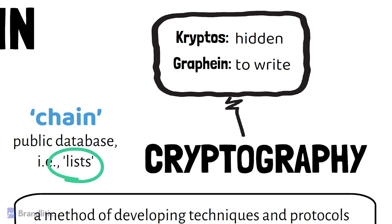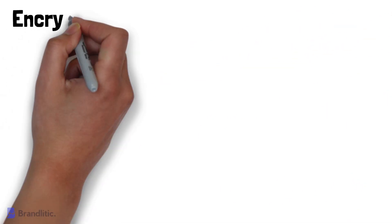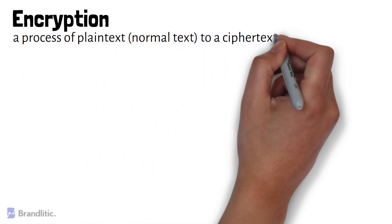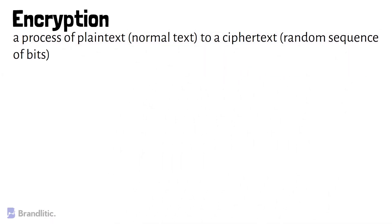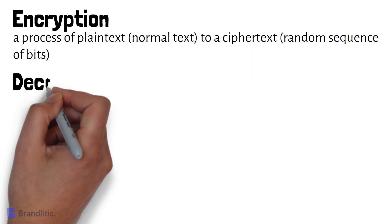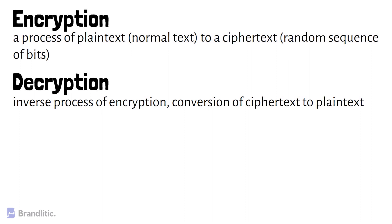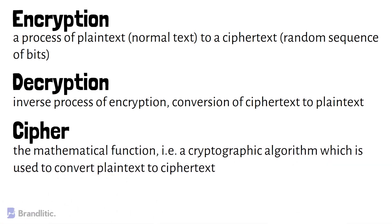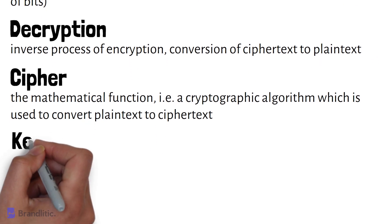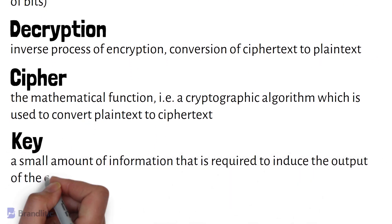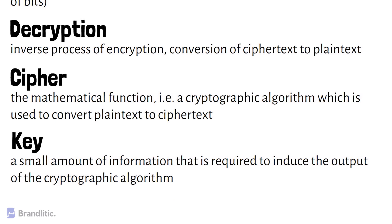In order to fully understand cryptography, you first need to understand several related terms. First, encryption: it is a process of converting plain text to cipher text or a random sequence of bits. Next, decryption: it is the inverse process of encryption, i.e., conversion of cipher text to plain text. Cipher: it is a mathematical function, i.e., a cryptographic algorithm, used to convert plain text to cipher text. And last, key: it is a small amount of information required to induce the output of a cryptographic algorithm.